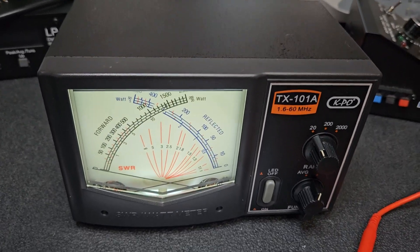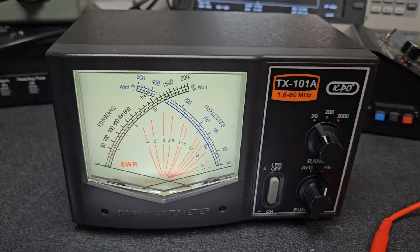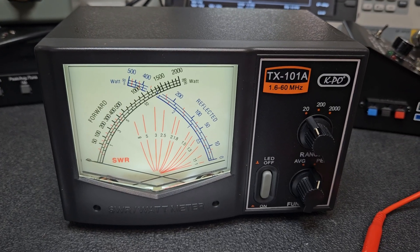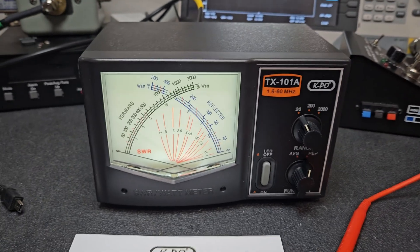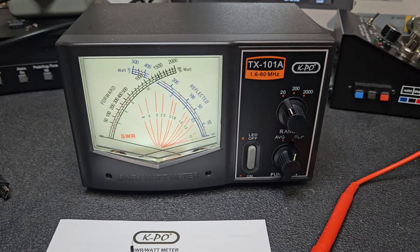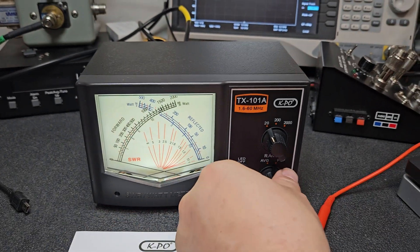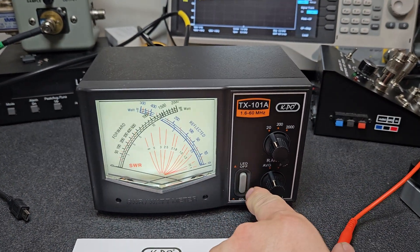Here's our meter. If we look on the back of the meter, you can see it has a nice backlight with average and PP modes, and you can shut the backlight off if you don't want it on.